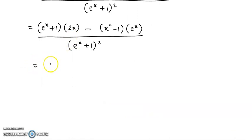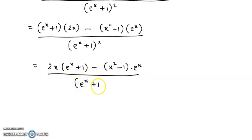This becomes 2x·e^(x+1) minus (x²-1)·e^x, all divided by (e^(x+1))².